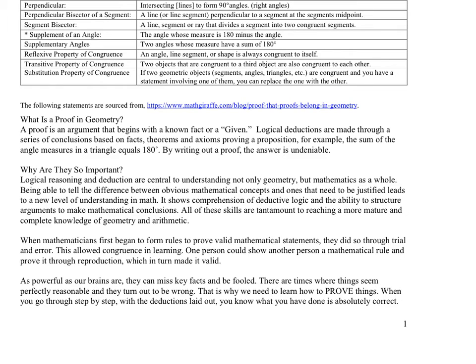I found most of this material from a website - mathgiraffe.com - I felt a little embarrassed sourcing it, but it's the best argument I could find for why proof in geometry is useful. A proof is an argument that begins with a known fact or given premise. Logical deductions are made through a series of conclusions based on facts, theorems, and axioms, proving a proposition such as: the sum of angle measures in a triangle equals 180. By writing out a proof, the answer is undeniable.